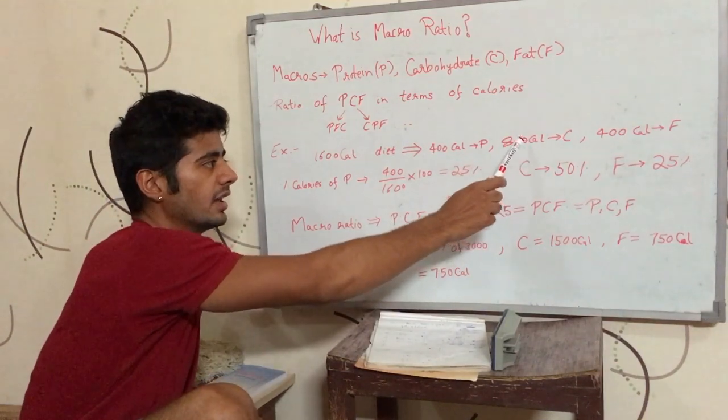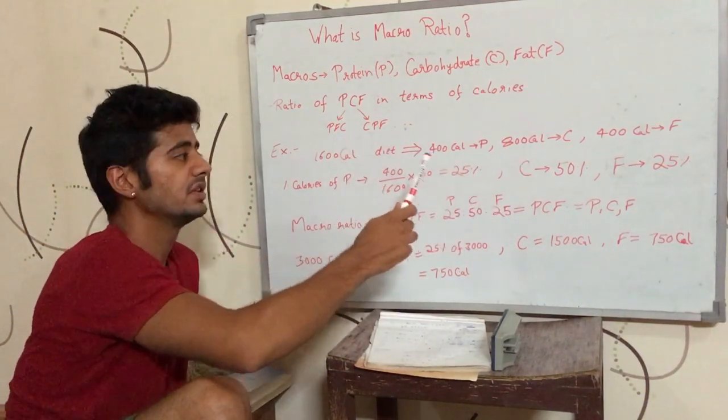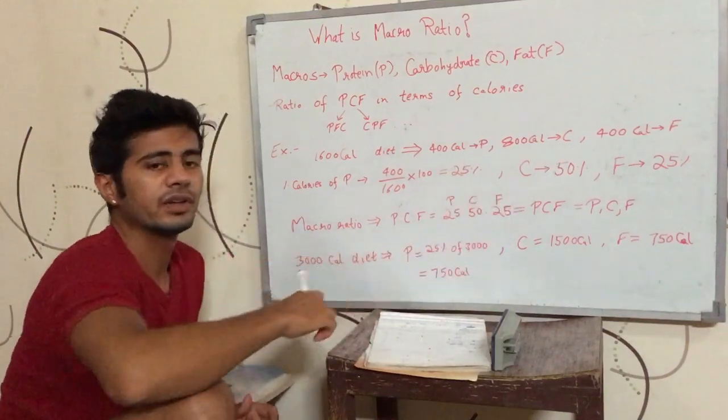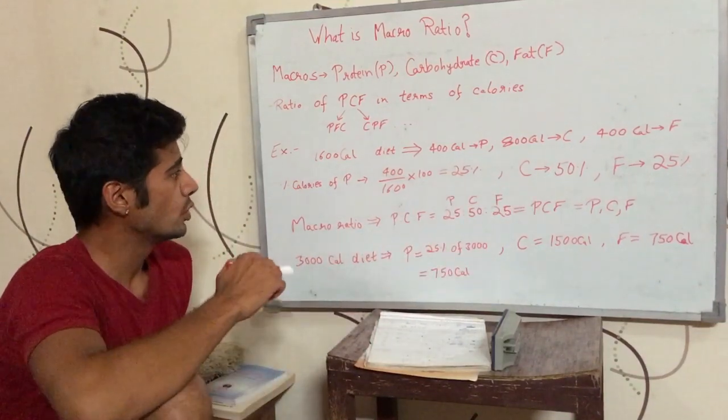Similarly, 800 calories come from carbohydrates. That means 50% of the total calories come from carbohydrates. Similarly, 25% calories come from fat.